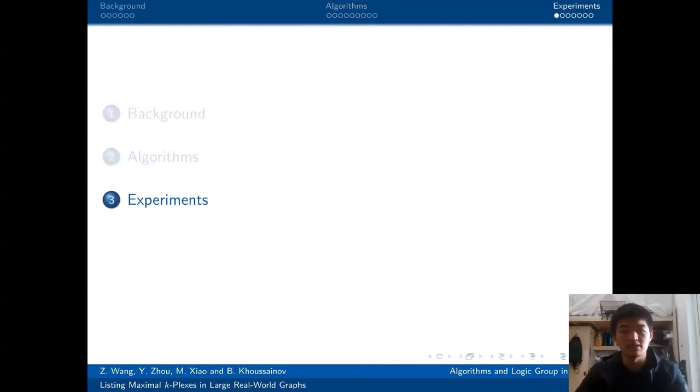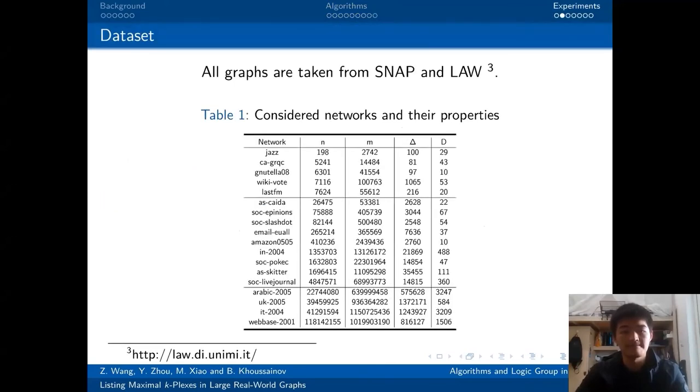The third part is the experiments. In terms of our dataset we tested, all the graphs are taken from the SNAP bundle. As you can see, the largest graph we tested has more than 1 billion edges, but its degeneracy is only 1,500.